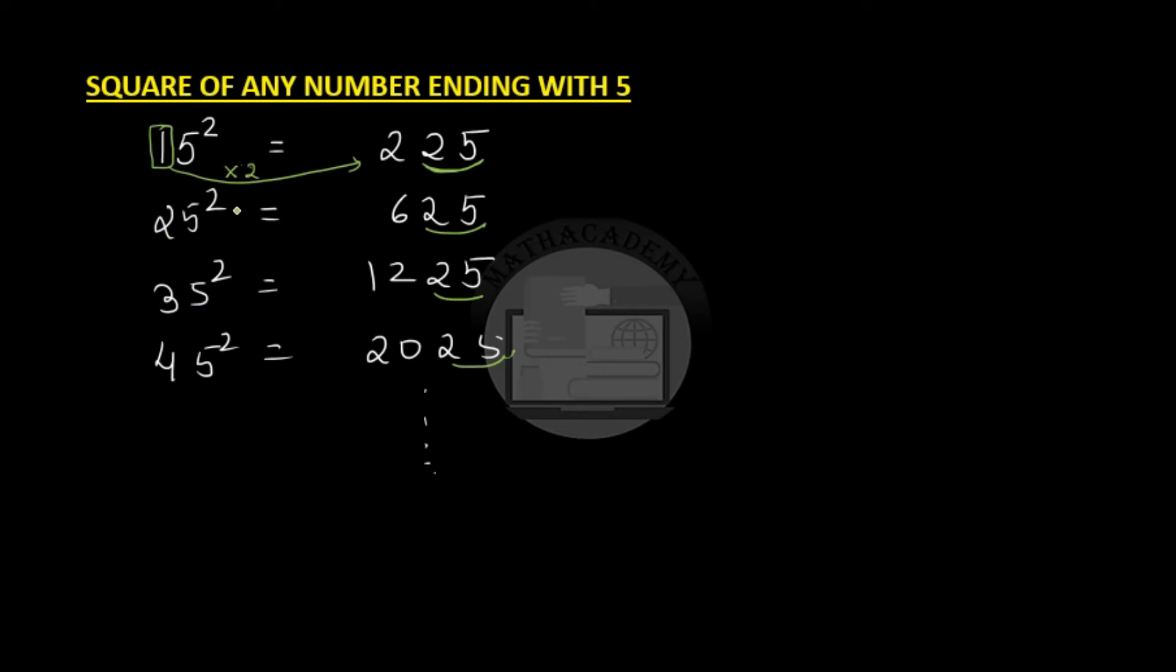If we have 25 square, then we look at this 2. And we multiply 2 by 1 more than 2, which is 3. We get 6.